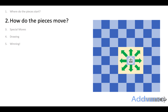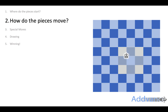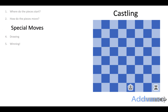Now we have the king. The king is the most important piece — if you lose the king, you lose the game. The king can only move one square in any direction.